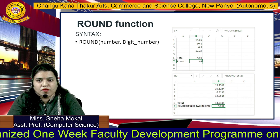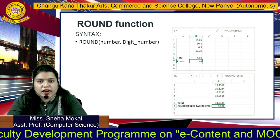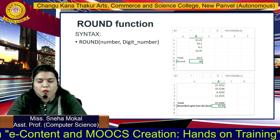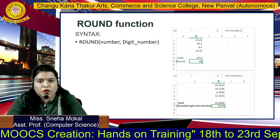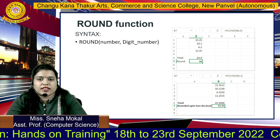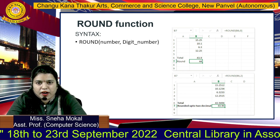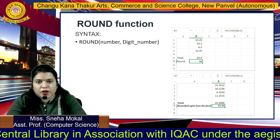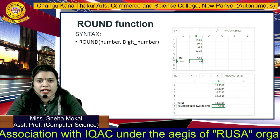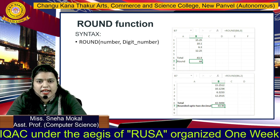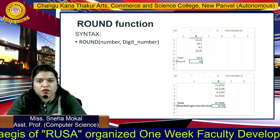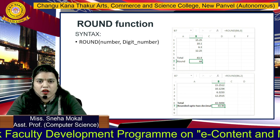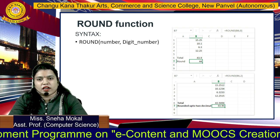Next है ROUND function. Round function क्या करता है — वो आपका figure करके देता है. Suppose आपने लिया 43.9 — तो उसका output क्या देगा? 44 — क्योंकि वो आपको round up करके figure देता है. इसका syntax है: ROUND(number, digit_number). Number मतलब आपका decimal number जैसे 43.9, और digit number में 0 डाला तो 44 आएगा. अगर आपको 1 digit चाहिए तो output 43.9 ही रहेगा.